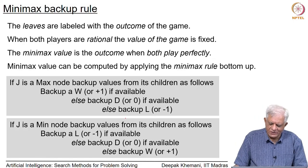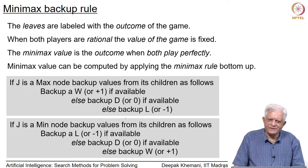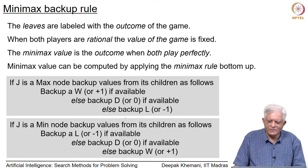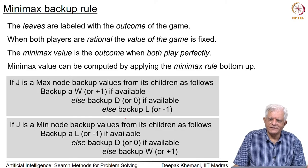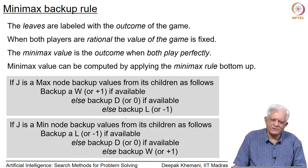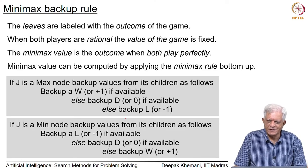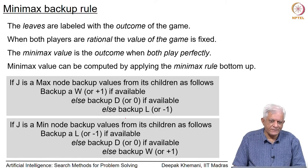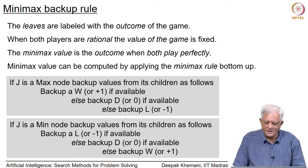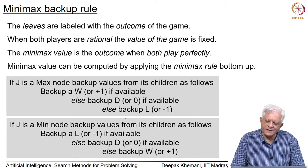The game tree encapsulates all the rules of the game — it is constructed by looking at the game rules and deciding what moves are available to Max and Min. Each move has a label, for example 'pawn to king 4' or 'place a cross at a particular square in tic-tac-toe.' We have a layer tree with a set of choices, and we apply the backup rule in a bottom-up fashion starting from the leaves, moving up towards the root. Having done that, we know the outcome if both players play perfectly.